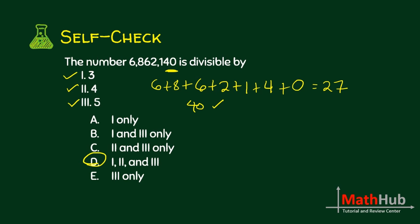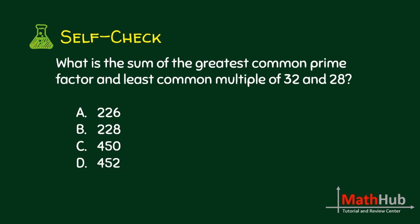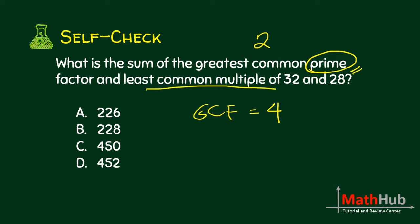So the answer is letter D. What is the sum of the greatest common prime factor and least common multiple of 32 and 28? First, we need to find the greatest common prime factor. It's not 4 — although the GCF, the greatest common factor of 32 and 28, is 4. But what we want is the greatest common prime. The answer is 2. What is now the LCM of 32 and 28?